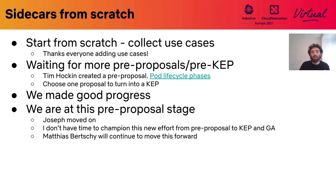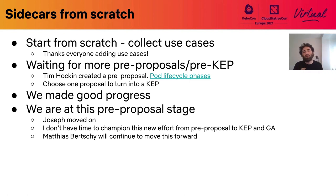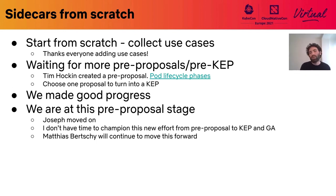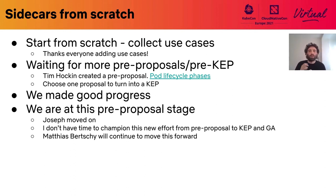We have done that and we have one proposal by Tim Hockin. The idea is to later choose with the community which proposal should turn into a KEP. Looking back, we made good progress. We have documented a lot of use cases we can now use to create proposals, and I really want to thank everyone that helped by adding their use case there. This journey also helped to clarify that sidecars are important to Kubernetes and that we don't want to make minimal changes — we want something that properly solves the problem, opening the door for bigger changes and more complex container dependencies within the pod.